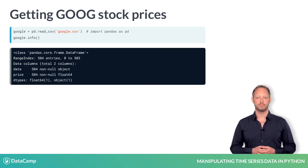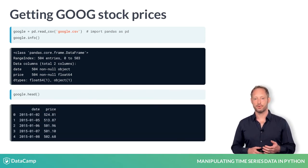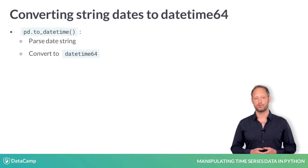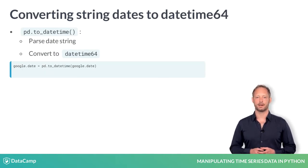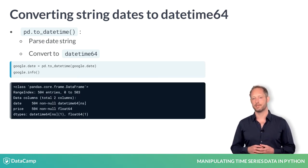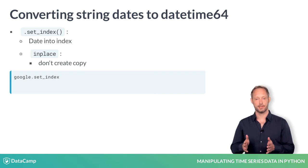You'll notice a column called Date that is of data type object. However, when you print the first few rows using the head method, you see that it contains dates. To convert the strings to the correct data type, Pandas has the toDateTime function. Just parse a data column or series to this function and it will parse the string as DateTime64 type. You can then set the repaired column as index using set_index.